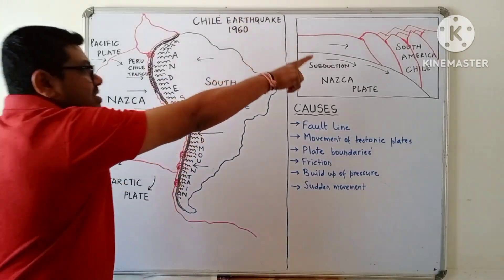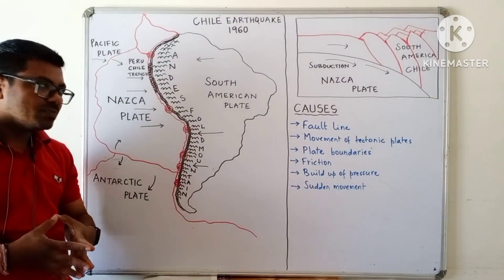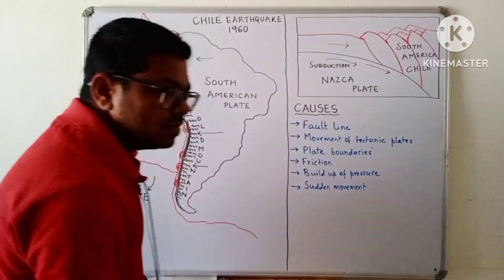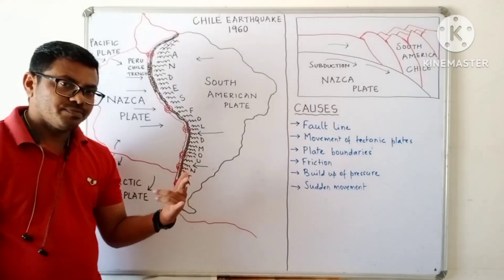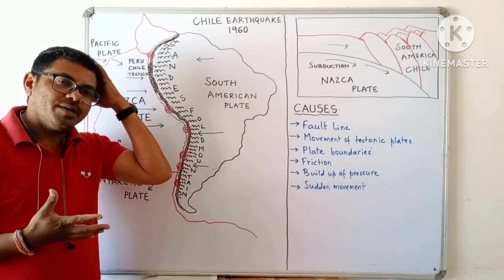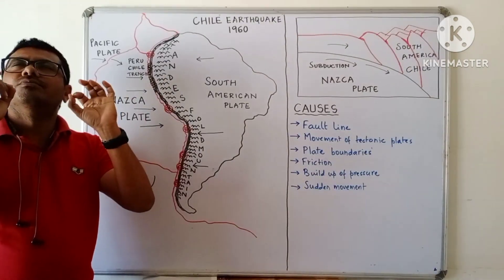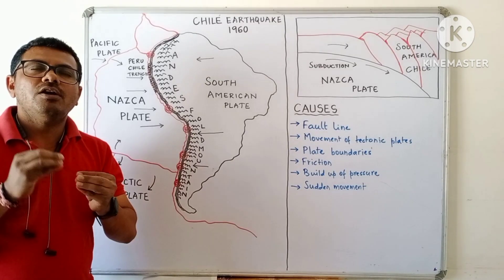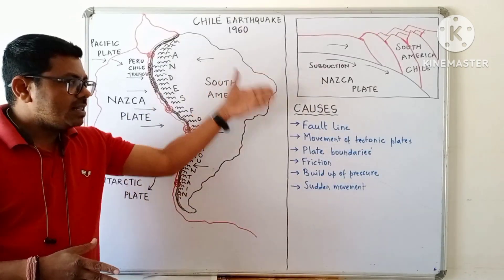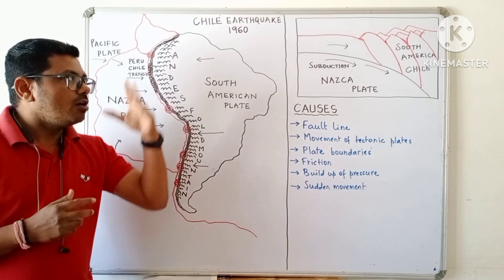If you remember the diagram it becomes easy to describe. Either you remember the diagram and write the answer, or you remember the answer and write directly. This diagram is like a mind map that should be fixed in your mind — whenever you think about the causes of the Chilean earthquake, this diagram should appear in front of your mind. These are the terminology you should note down, because you have to use these terms to describe the causes of the Chilean earthquake.